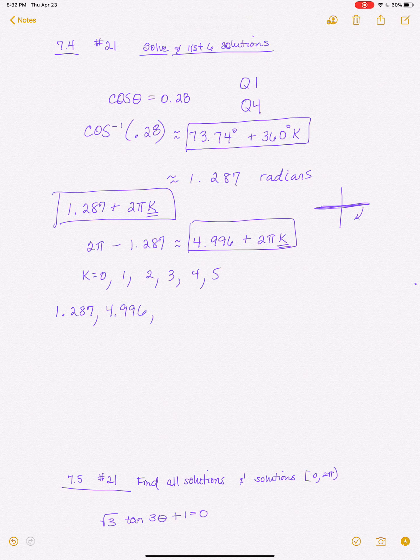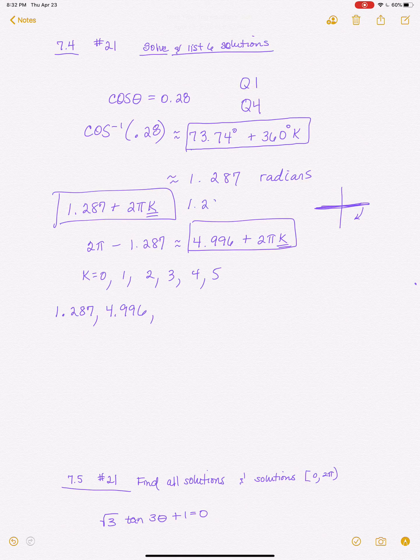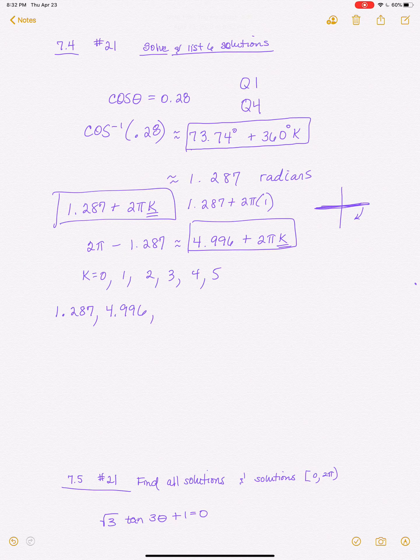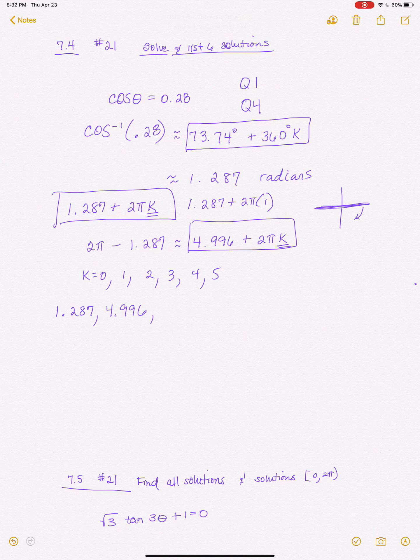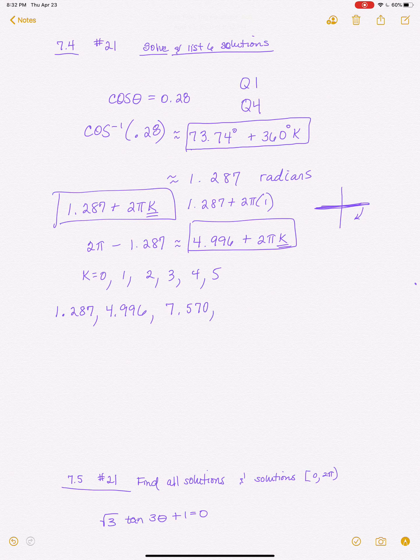Alright, then I'm going to plug in K equals 1. Now remember that I have to do my order of operations. So what I'm doing here is 1.287 plus 2 pi times 1. Alright, so I'm actually going to do 2 times pi plus – because you multiply before you add 1.287 – and so another solution is going to be 7.570.